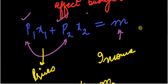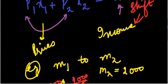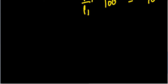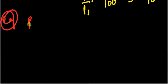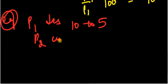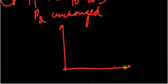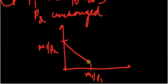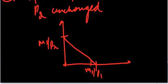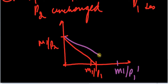Now what happens if there is a change in price? For example, the price of good 1 decreases from 10 to 5 while the price of good 2 remains unchanged. Initially the intercepts were M1/P1 and M1/P2. Since P1 has decreased, the x1 intercept moves outward to M1/P1', and the budget line will rotate — there is a pivot shift.